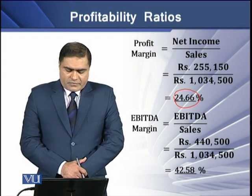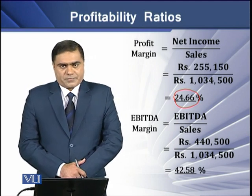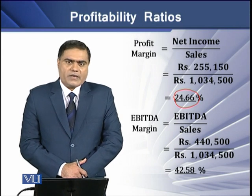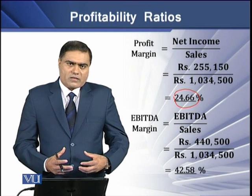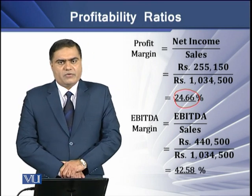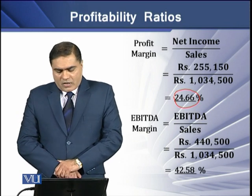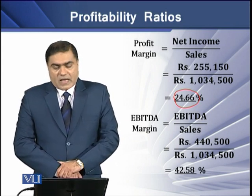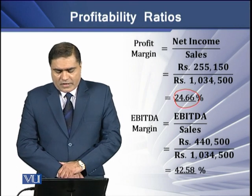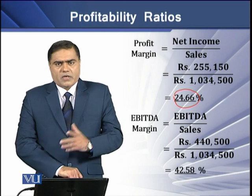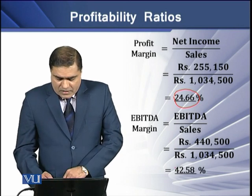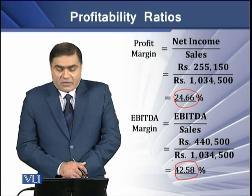Another version we have is EBITDA Margin. EBITDA Margin tells us how much cash operating profit the firm has generated. The formula we use is EBITDA over Sales. If we have EBITDA of 440,500 rupees and sales of 1.034 million, we calculate the EBITDA margin of 42.58%.